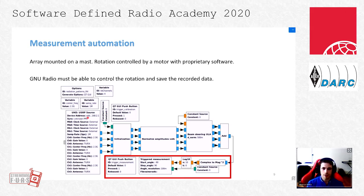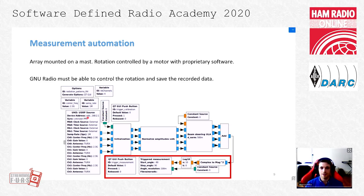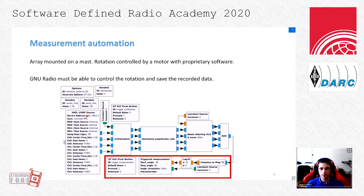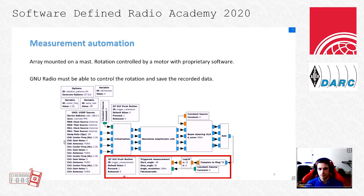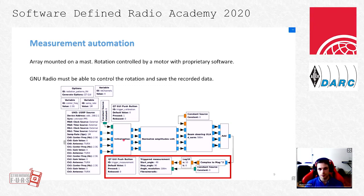Now that we proposed criteria to quantify our system performance, what remains is to automate our measurement process as much as possible. Here is an illustration of the GNURadio program we used to carry out our measurements. Measurement automation is handled by the blocks highlighted in red in this figure. Especially, the triggered measurement block we implemented has to control the rotation of the mast during measurement and synchronize it with data recording.